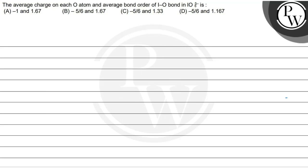Hello Bachu, let's read the question. The question asks for the average charge on each oxygen atom and the average bond order of the I-O bond in IO₆⁵⁻. Here the options are given.